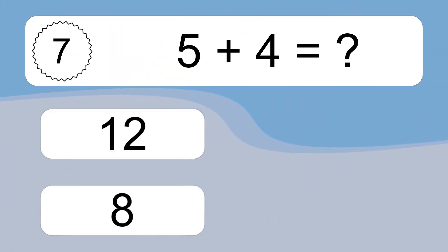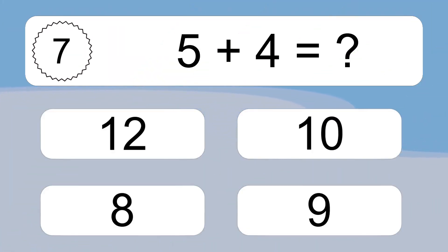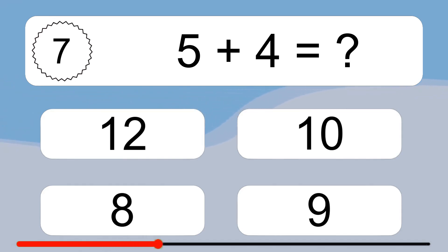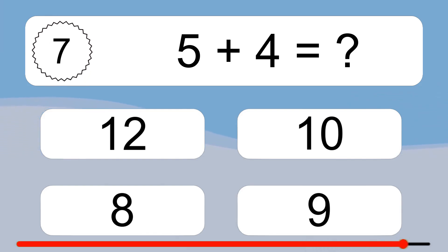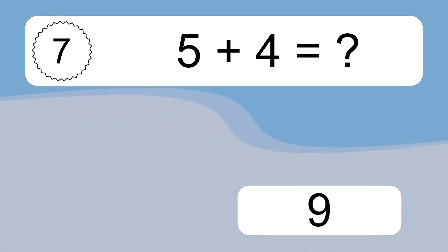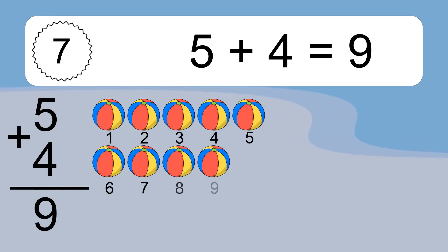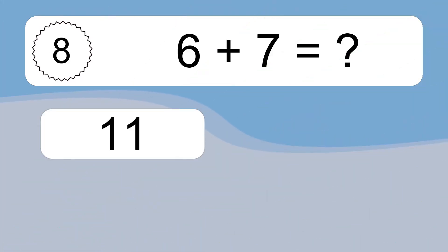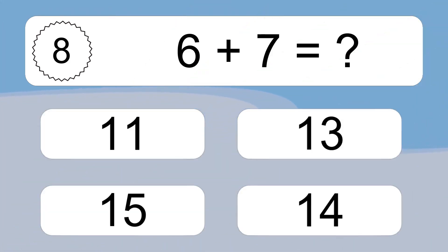5 plus 1 equals 9. Let's count it: 1, 2, 3, 4, 5, 6, 7, 8, 9.